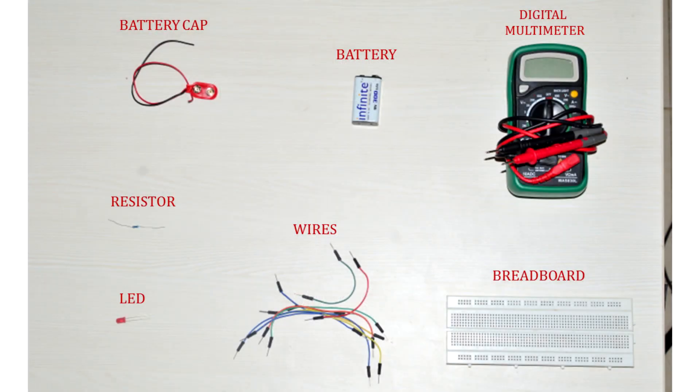In this video we will learn how to glow an LED on a breadboard and also how to use a DMM to test the circuit. For this project we will need a battery cap, battery, digital multimeter, resistor, LED, wires, and a breadboard.